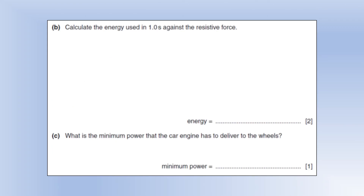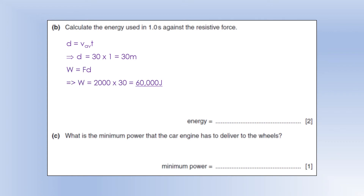Calculate the energy used in one second against the resistive force. The distance is the average velocity times time, so 30 times 1 — the car does 30 metres every second. Once we have the distance, we multiply by the force to get the work done, and that's 60,000 joules.